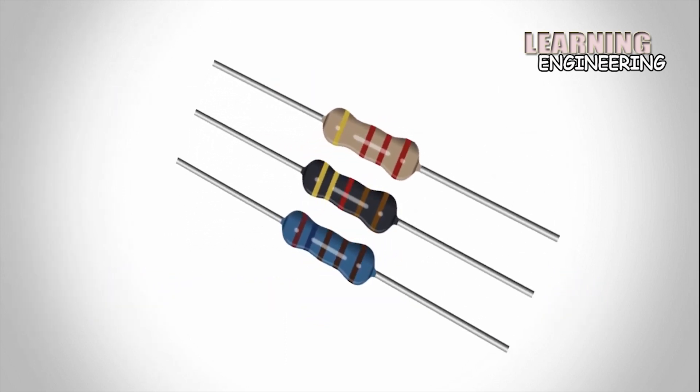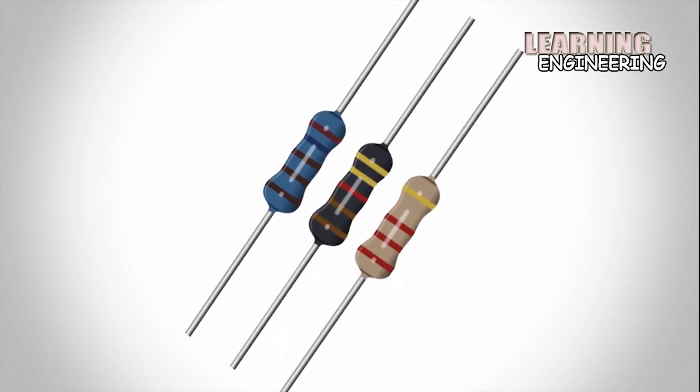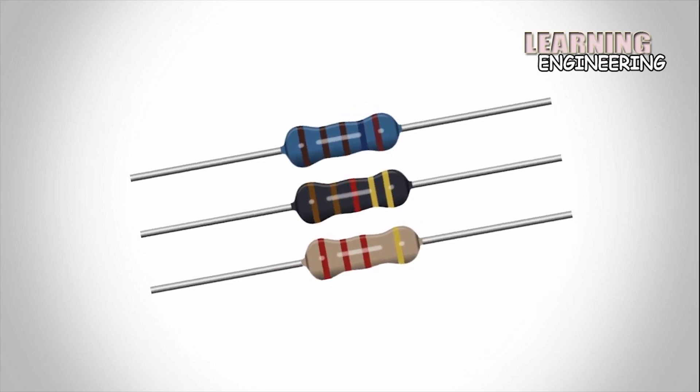Resistor color coding. Resistor color bands were used because they were easily and cheaply printed on tiny components.